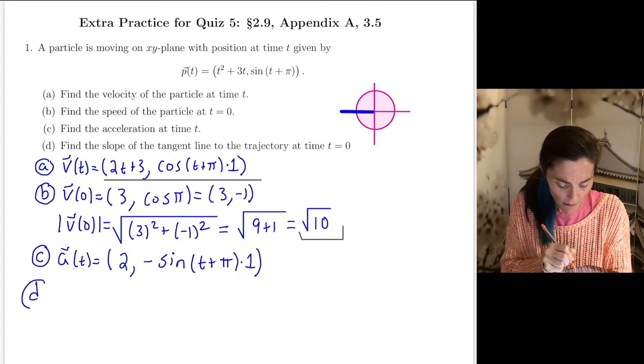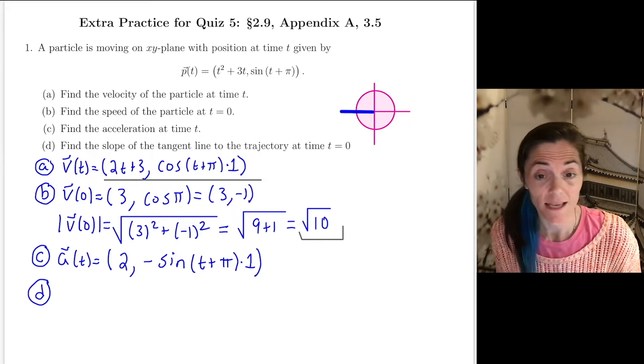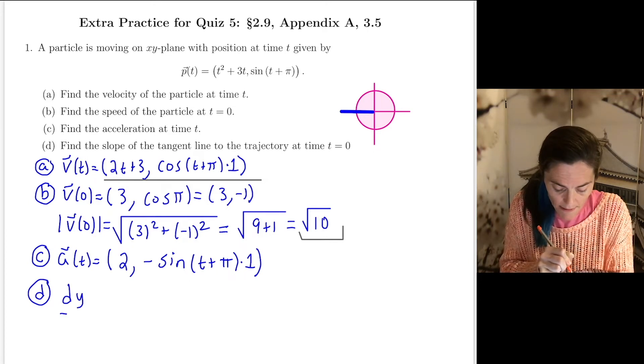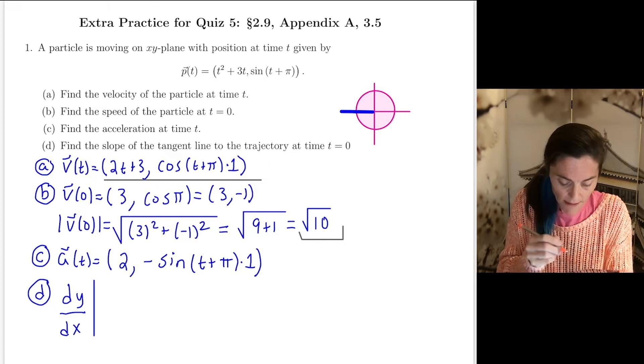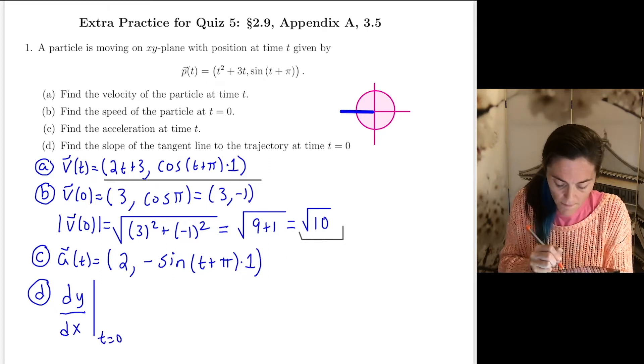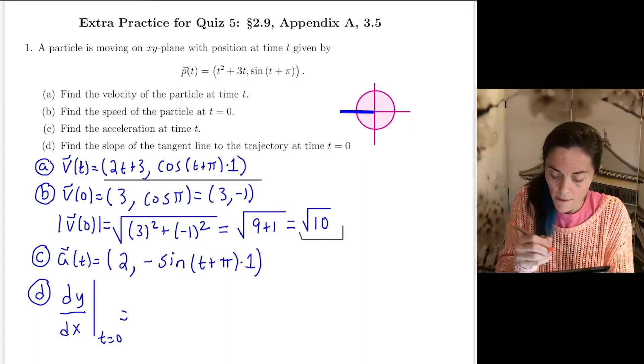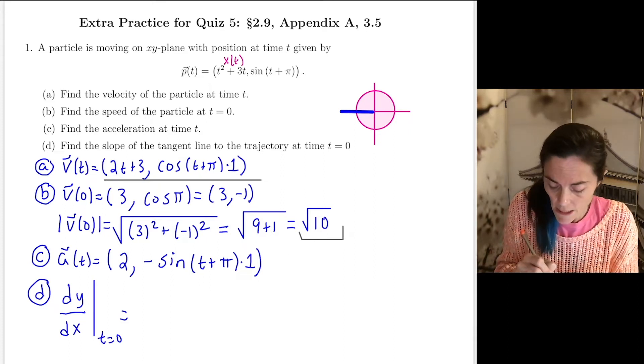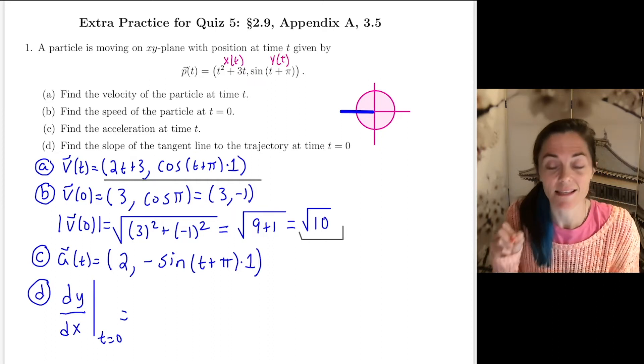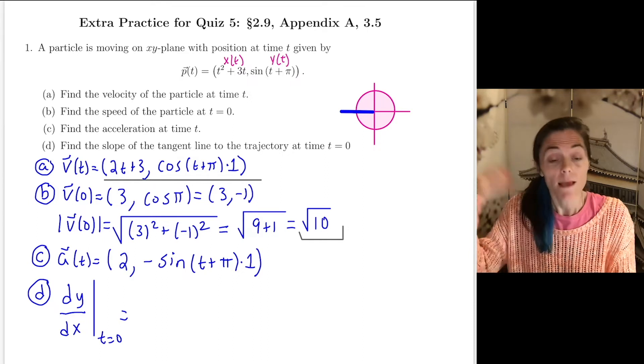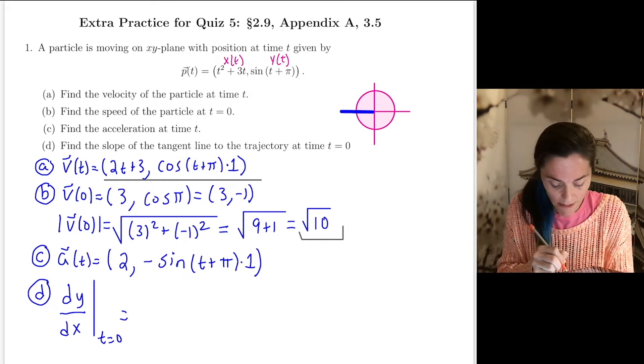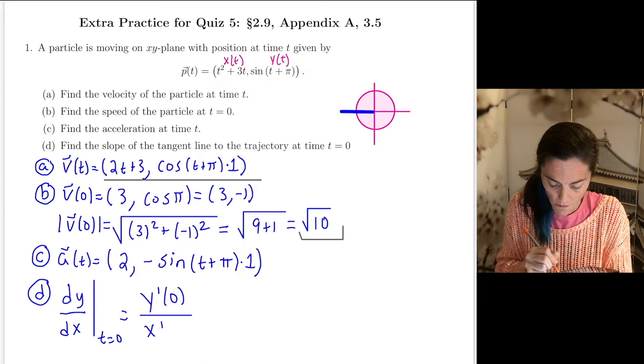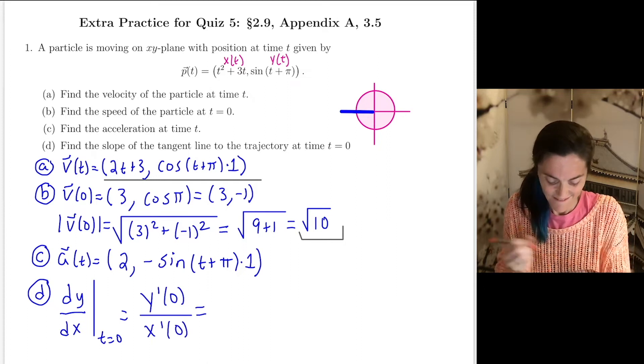Well, acceleration is the derivative of velocity. And when we have motion in space, we just differentiate each component. So we differentiate the first coordinate, we get 2. Differentiate the second coordinate, we get minus sine of t plus pi. Now the last part is letter D. We want the slope of the tangent line to the trajectory at time t equals 0. Well, what this is is dy/dx at t equals 0.